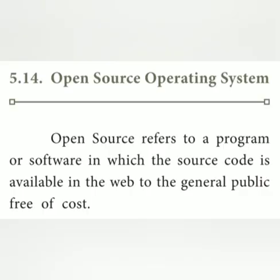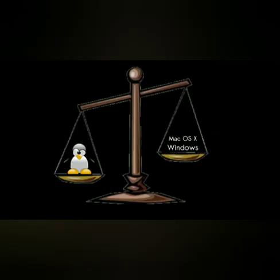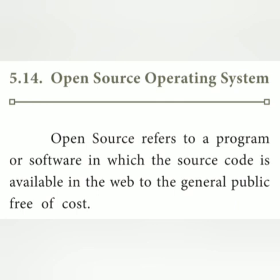The first topic is open source operating system. We already discussed this in chapter four. An open source operating system is completely free. Open source refers to a program or software in which the source code is available on the web to the general public free of cost. The open source code is typically created as a collaborative effort in which programmers continuously improve the source code and share the changes within the community.